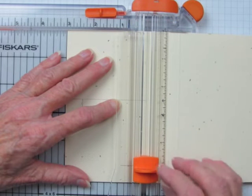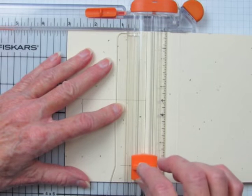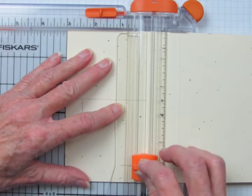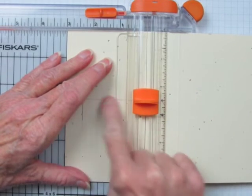So I line that up with my 5 eighths inch mark. Then I drop the cutting guide and I will cut up to the 3 inch line at the top.